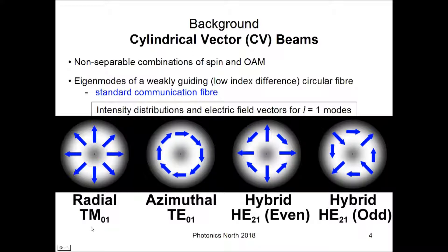You may be familiar with the terminology where the radial mode is called TM01, azimuthal is TE01, and the hybrid modes are HE21, even and odd. These are interesting as well because they're eigenmodes of a weakly guiding or low index difference circular fiber. And this is just a standard telecom fiber.